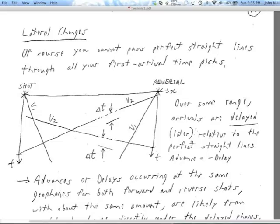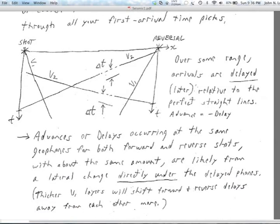Other kinds of complications that are violating our simple assumptions. Now, there are lateral changes in velocity, lateral changes in refractor structure. And all of those are going to prevent our time picks from following perfectly straight lines. We're going to have some uncertainty in every time pick. And that's going to interfere with making perfectly straight lines. And we're going to have also some real changes in velocity, real changes in structure, not perfectly planar dipping layers that are also going to appear as disturbances in our first arrival time picks.